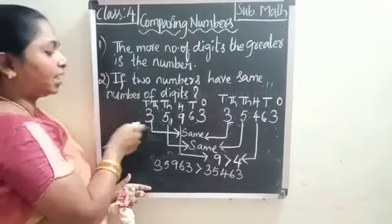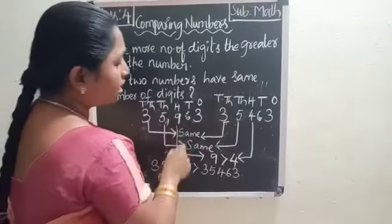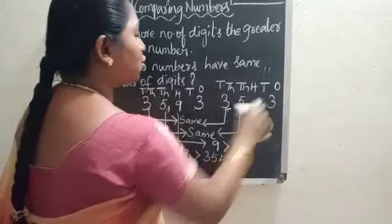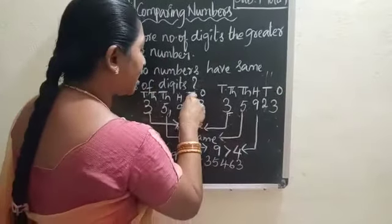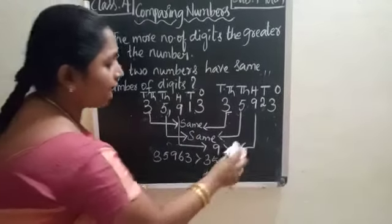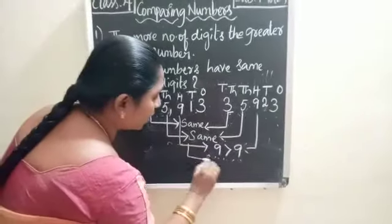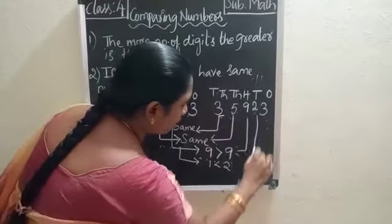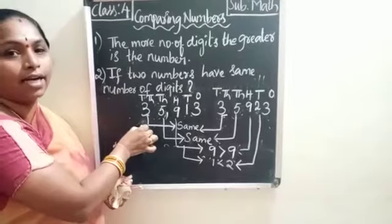When comparing, we start with the 10,000s place. When both are the same, we go to the thousands place. When those are also the same, we go to the hundreds place. Now suppose the tens place is also different: here it is 2 and in the other it is 1. All 10,000s, thousands, and hundreds digits are the same, but the tens place is different — one is less than two. So 35,923 is greater than 35,913.